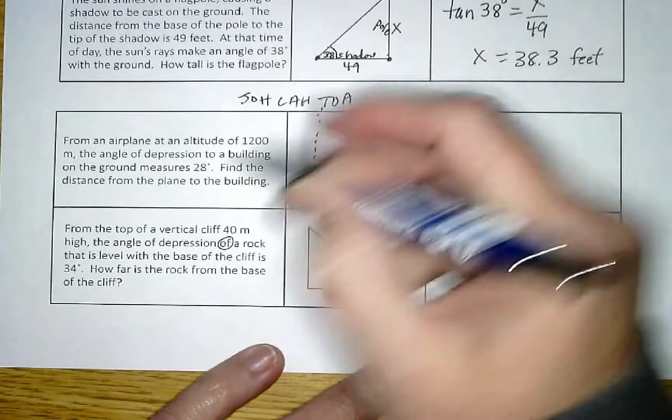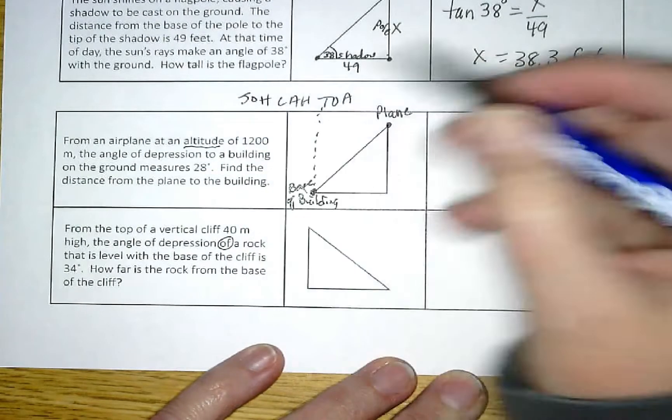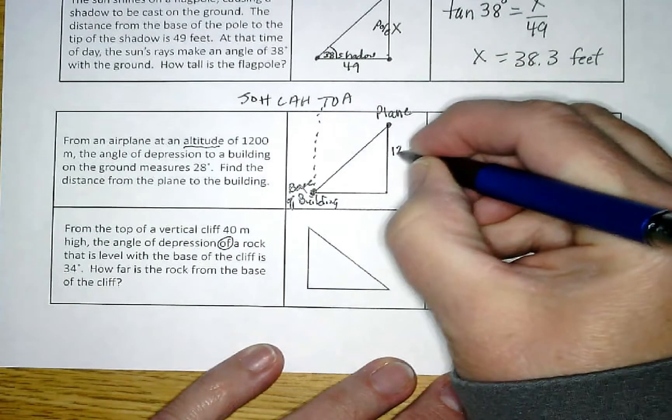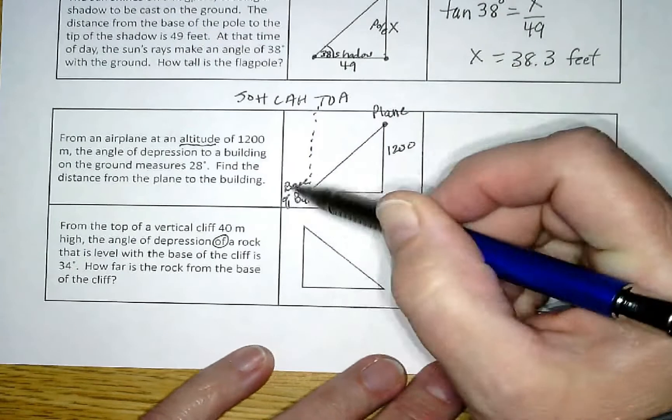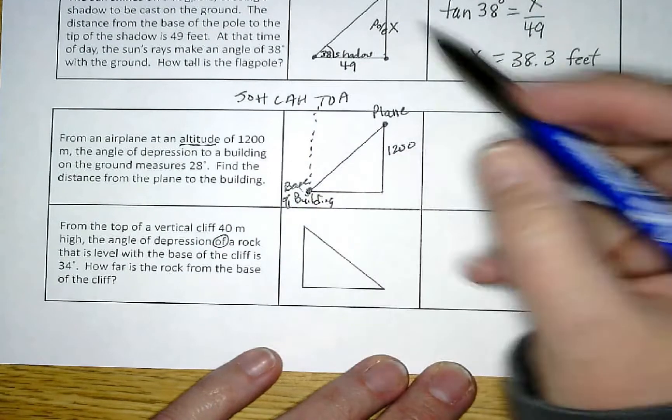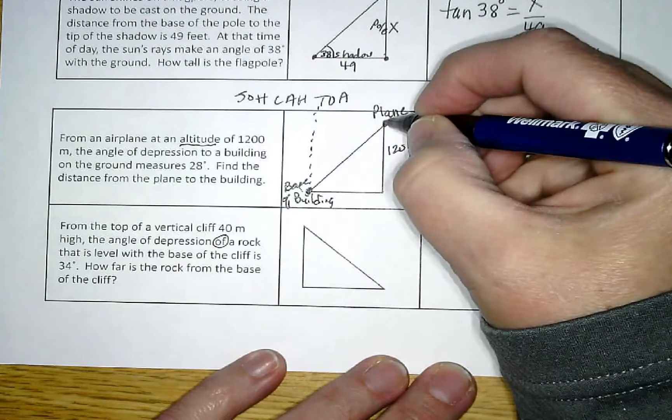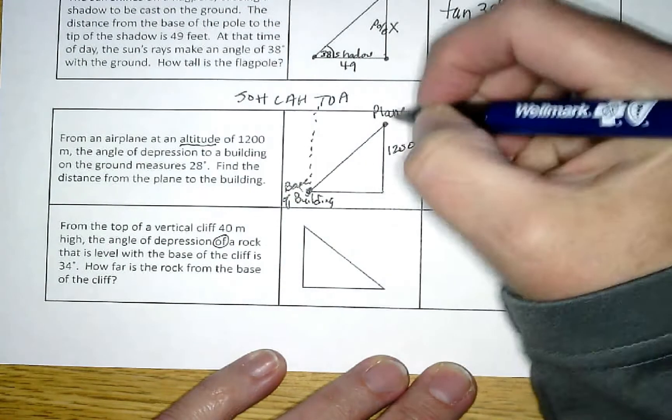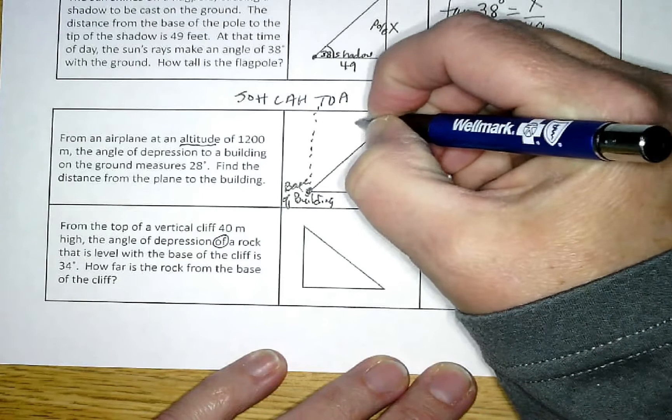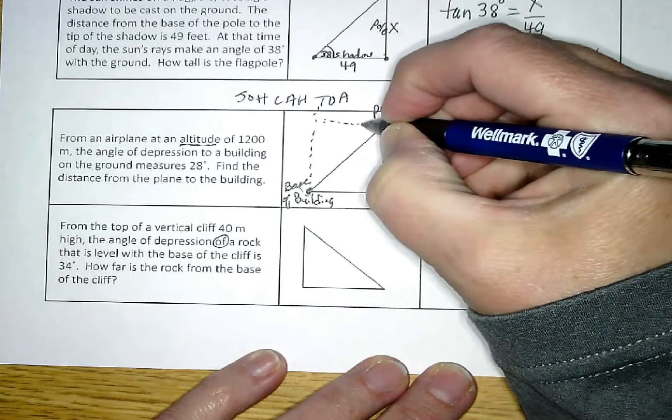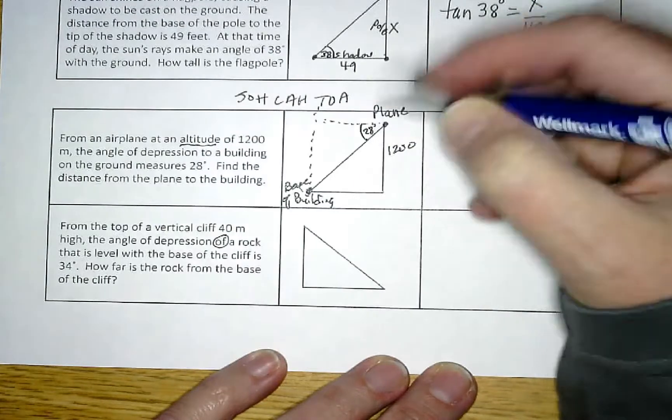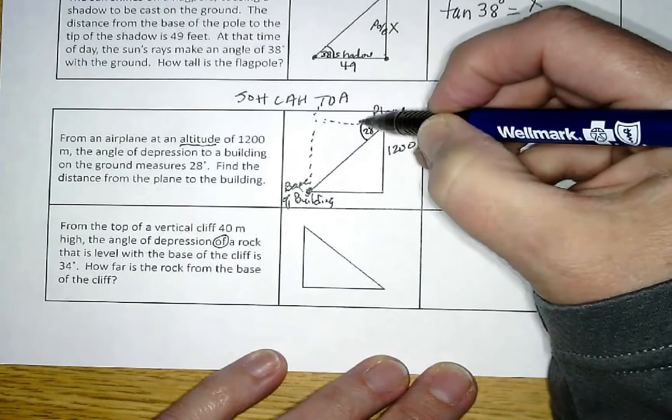This point right here, when you see the word altitude, that's how high it is. So from the ground up to the plane is 1200. The angle of depression to a building on the ground measures 28 degrees. So when I think of angle of depression, if I'm sitting in the plane and I have to look straight out, when I look down to the base of the building, that angle is 28, not inside the triangle, it's this one outside.